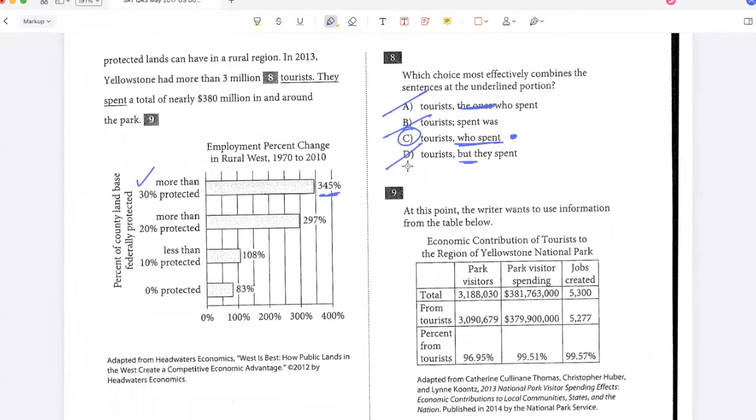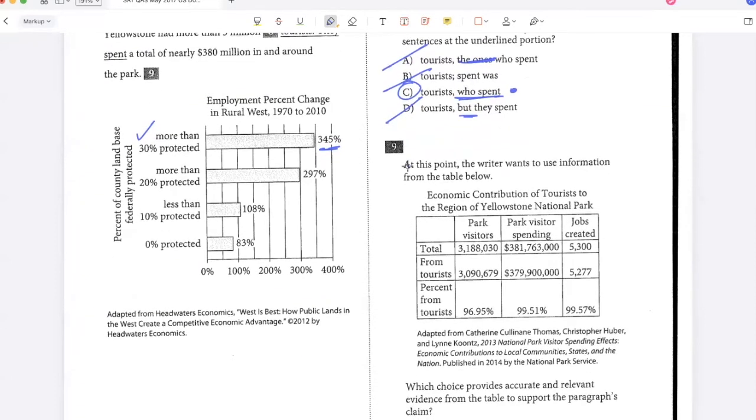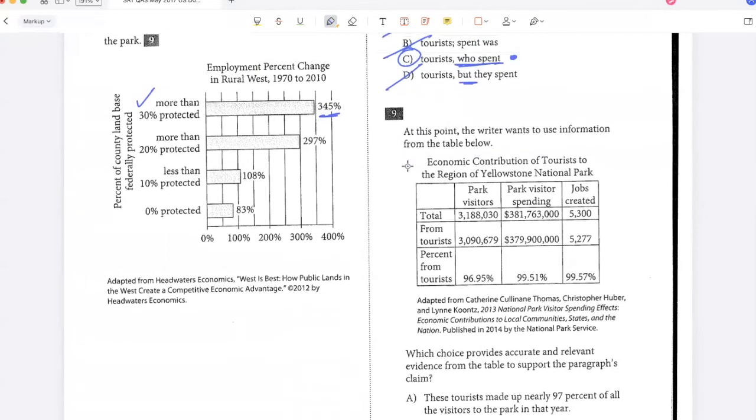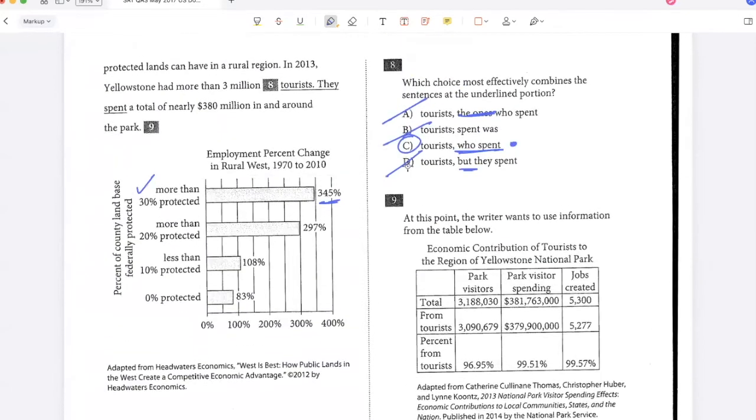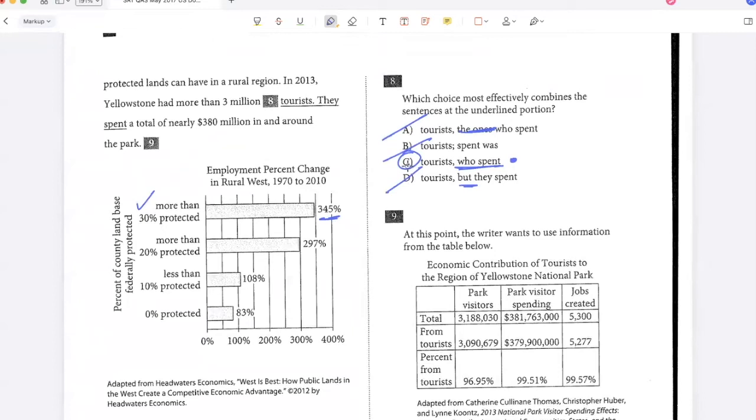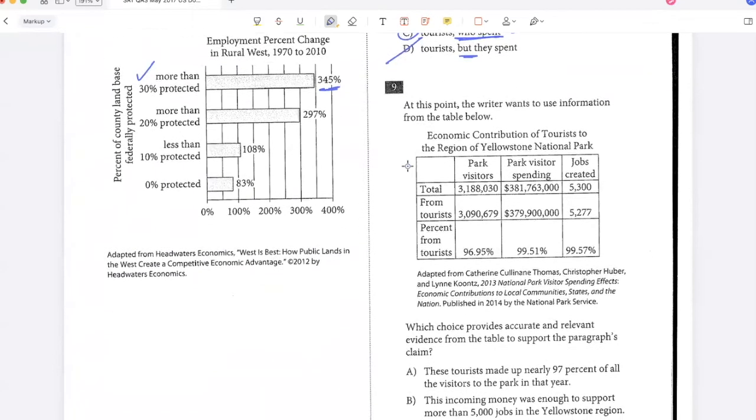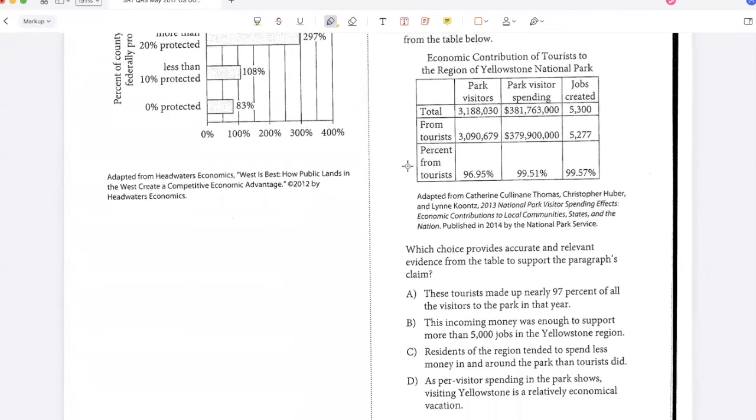So they spent a total of 380 million in and around the park. At this point, the writer wants to use information from the table below. Which choice provides accurate and relevant evidence from the table to support the paragraph's claim? I'm talking about how these parks have boosted the rural economy in the West and how these tourists, 3 million of them, spent a total of 380 million dollars. These tourists made up nearly 97% of all the visitors to the park in that area. This is a true statement. So I'm talking about the economic contribution, I'll keep it for now.